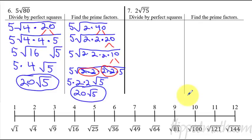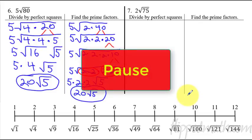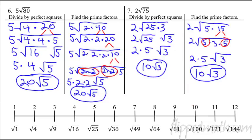Number 7 — I want you to do both methods. Pause the video now, and after you're done go ahead and resume and we'll see how you did. The answer is 10 radical 3. You can see both ways I did this. The trick is that sometimes you might not write the two buddy numbers next to each other — that's okay. If you see there are two of them, just circle them, and those are the ones that cancel and come out as 1 on the outside of the radical.